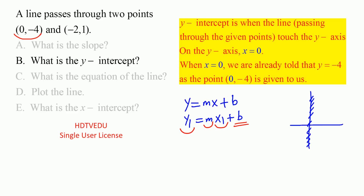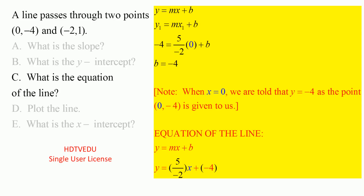Just in case you want to know the general approach: substitute -4 for y1, -5/2 for slope, and 0 for x1, plus b. What do we get? b is equal to -4. So for part c, the equation of the line — we already know b is -4. Now go back to y equals mx plus b, and we know what m is as well.